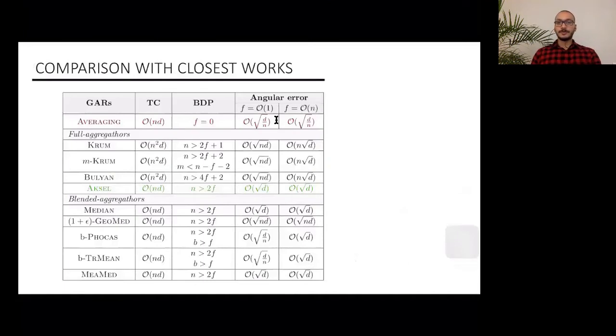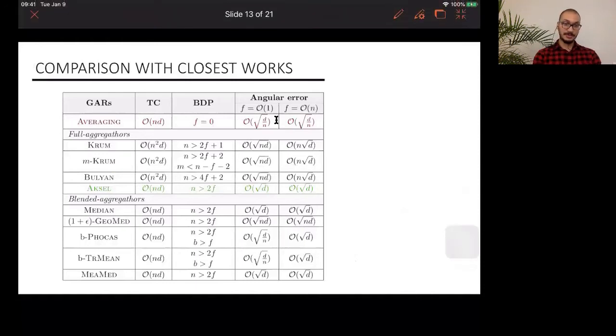Now let's compare the three most important properties of these closest guards to our work. Averaging is indeed fast. It has an optimal time complexity. We say it's optimal because in deterministic methods, one needs at least to read the content of the gradient matrix, which is done in big O(nd), where N is the number of workers and D is the dimension of the problem. It also has a low angular error, so it is decreasing when the number of workers increase, which is good. The problem is that it is not Byzantine resilient. F equals zero.